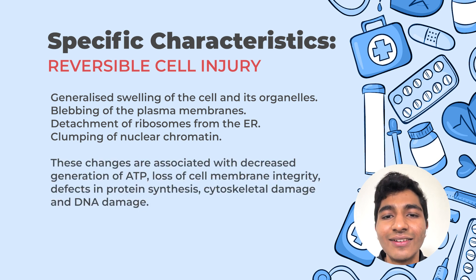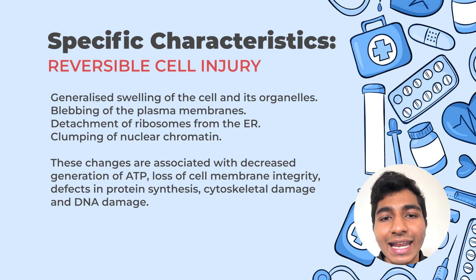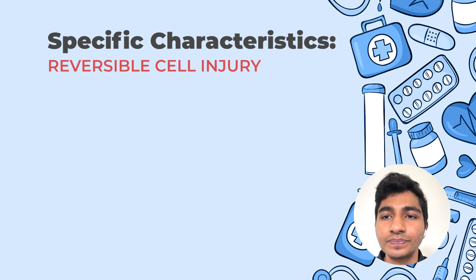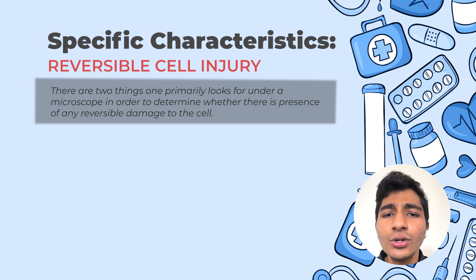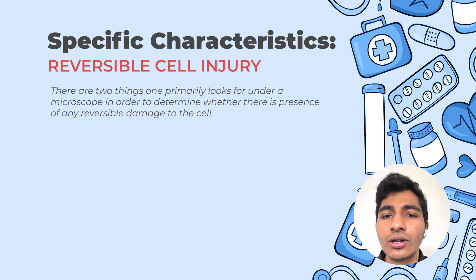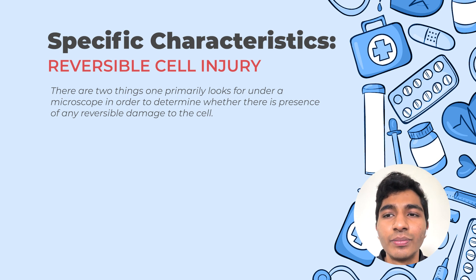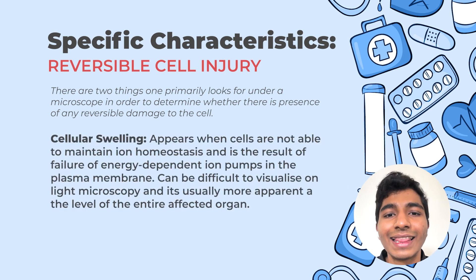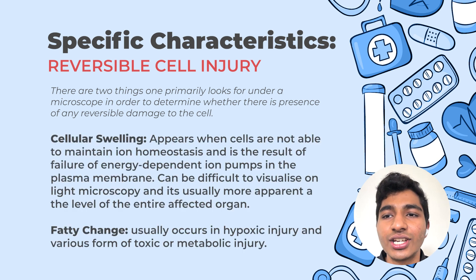These changes are all obviously associated with decreased energy in the cell, and if the energy in the cell is less the cell won't be able to function. There will be cytoskeletal damage as well as damage to the DNA. There are two things a doctor or pathologist primarily looks for under a microscope to determine whether there is presence of any reversible damage done to a cell: one is cellular swelling and the second is fatty change.